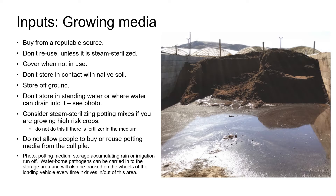Consider steam sterilizing potting mixes if you're growing high risk crops, such as California native plants for revegetation and restoration projects, where there's zero tolerance of any pathogens in the potting mix. But don't steam sterilize media that has fertilizer in it — do the steam sterilization first and then add any fertilizer that you need to use.